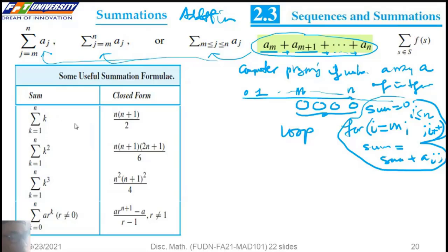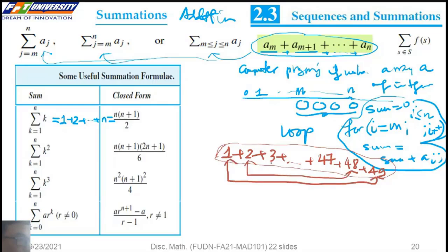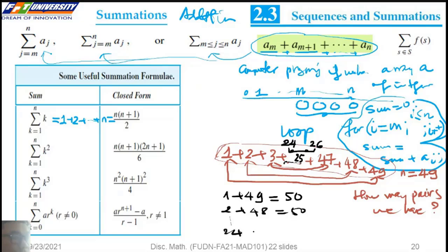There are some useful summation formulas. The first one: the summation of positive integers from 1 to N equals N times (N plus 1) divided by 2. We can make pairs: the first pair, the second pair, the third pair, and the last pair. So we have 1 plus 50 equals 51, 2 plus 49 equals 51, and so on. N is 49, so we have N plus 1 pairs, each summing to 50.